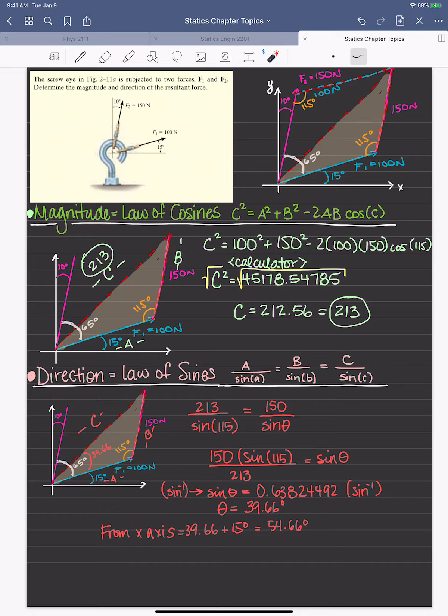So the first thing we do is we solve for what we can using what we know about trigonometry and geometry. We know that this here is a 90 degree angle. We subtract the 15 that they give us and the 10. That leaves us with a 65 degree angle here.